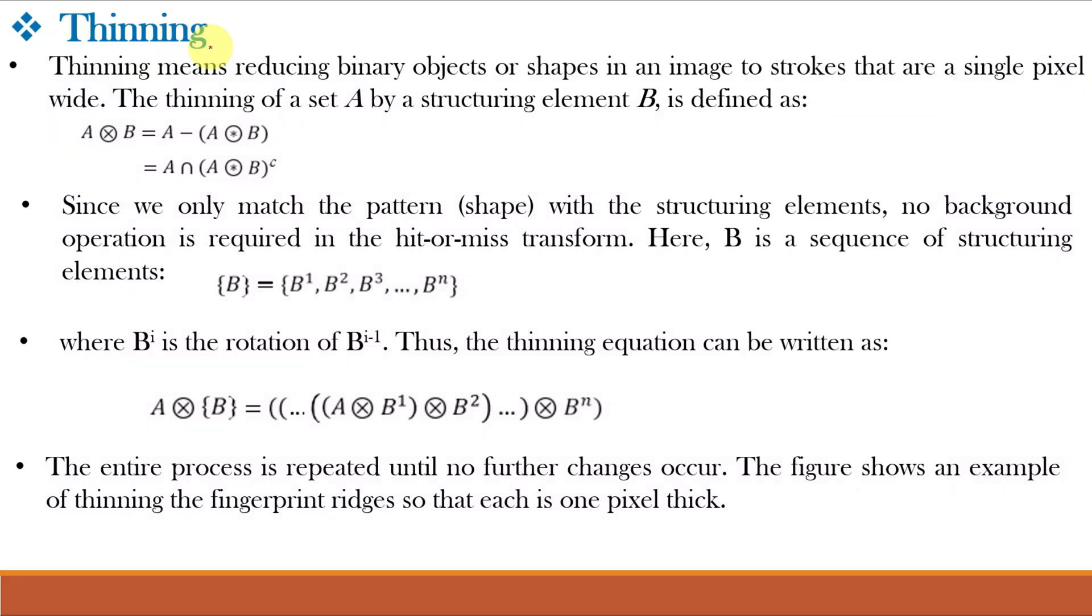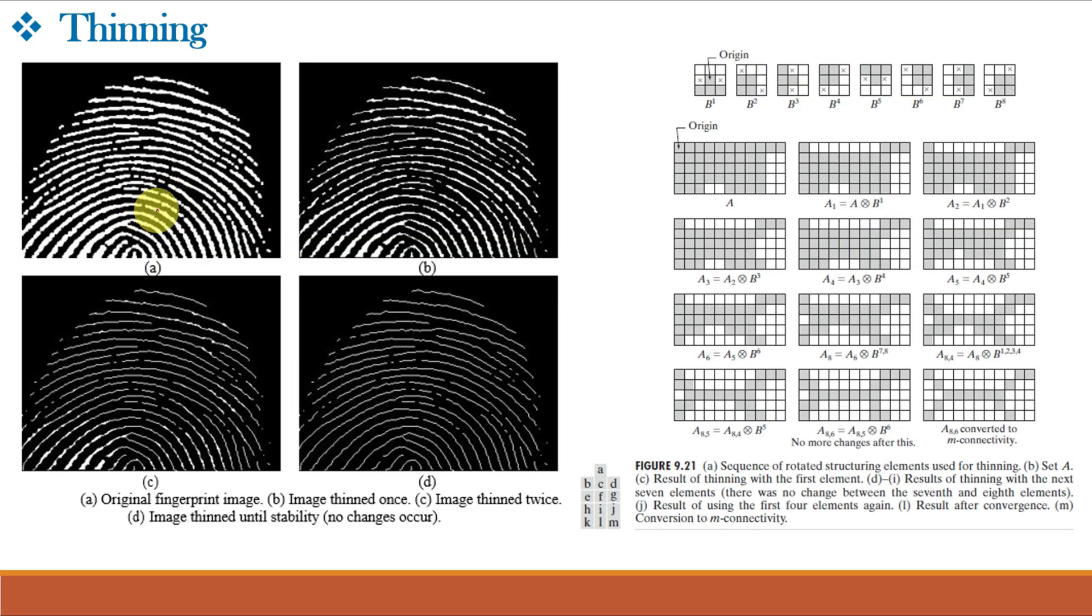Next is thinning. As the name suggests thinning will make the objects thinned in the image. It uses this hit or miss transformation and here we only match the shape with the structuring element and no background operator is required. Here b is a sequence of structuring elements. So the thinning equation is a hit or miss b1 hit or miss b2 up to bn and the entire process is repeated until no further change occurs.